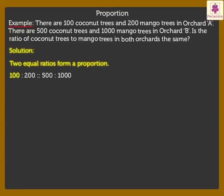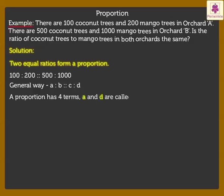It is read as 100 is to 200 is as 500 is to 1000. In general, it is written as A is to B is as C is to D. A proportion has four terms. A and D are called the extremes or outer terms and B and C are called the means or middle terms.